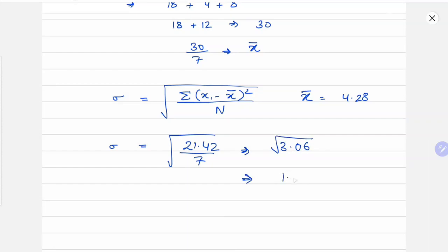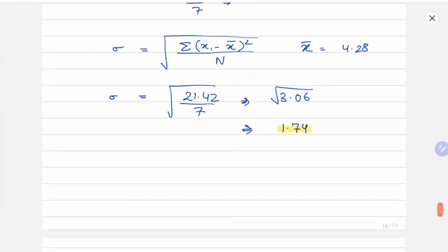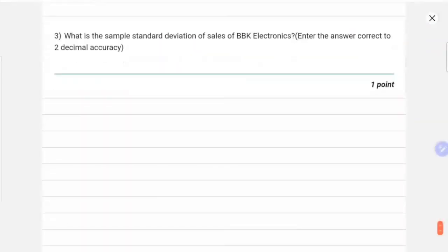This comes out to be √3.06, and our final answer for the population standard deviation of OnePlus sales is 1.74.